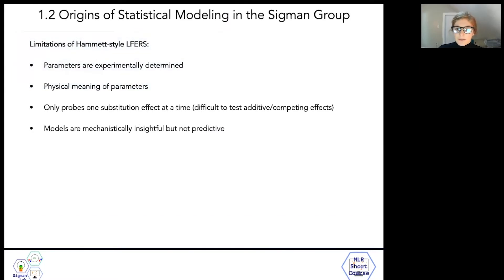We finished the last video with this slide, and at this time I described some of the limitations of Hammett-style linear free energy relationships. Early parameters were experimentally derived and sometimes pretty hard to interpret. Only one substituent effect could be probed at a time, and often the linear free energy relationship models were not predictive, although they were quite mechanistically insightful. Despite these limitations, linear free energy relationships remain a powerful mechanistic tool, and in the early days of the Sigmund group they were used quite frequently.